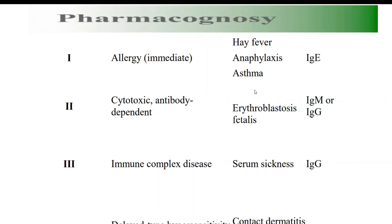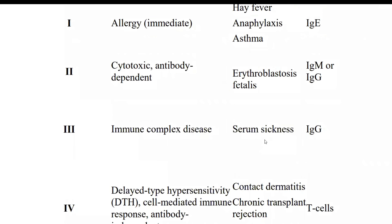Type 3 hypersensitivity is also known as immune complex disease. An immune complex involves antigen and antibody - the two main components of your immune system. When an antigen enters, antibodies are formed in response, and they bind together to form a complex, which deposits in various parts of the body. This is also called serum sickness, and the antibodies formed are IgG antibodies.